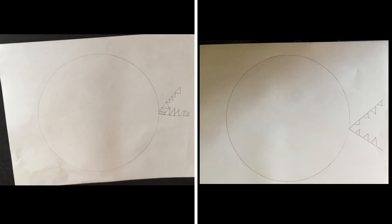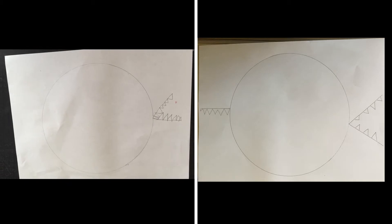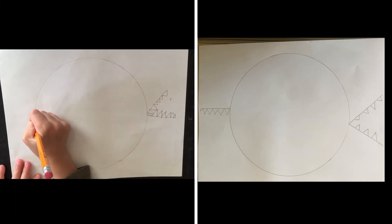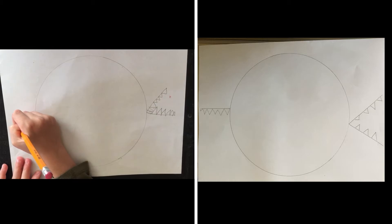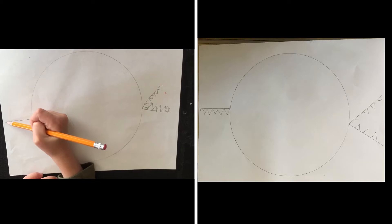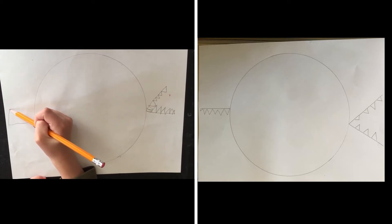Alright, next we need a tail for our piano alligator. On the opposite side of the circle from where the mouth is, we're going to draw a straight line, or horizontal line—remember that word. Perfect! And then we're going to give him some sharp scales—some more triangles.